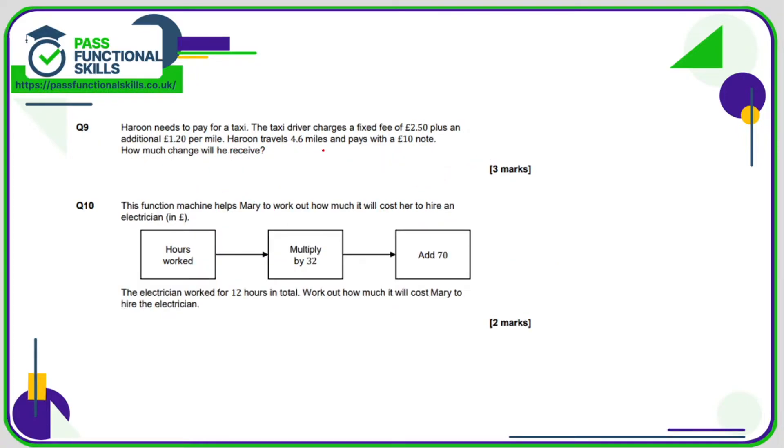Question number 9. So the taxi driver charges a fixed fee of £2.50, so just for getting inside the taxi it's £2.50 and £1.20 per mile. So if he's doing 4.6 miles, that's going to be 4.6 multiplied by £1.20 and then on top of that, plus the £2.50. Now 4.6 times £1.20 comes to £5.52. £5.52 plus £2.50 is £8.02. So therefore the change is going to be 10 minus 8.02, so the change he will receive is therefore £1.98p.